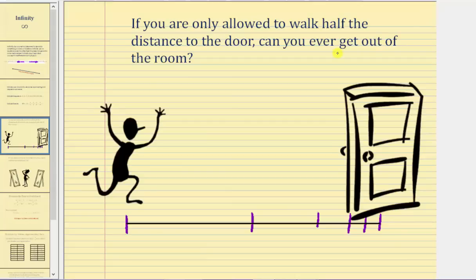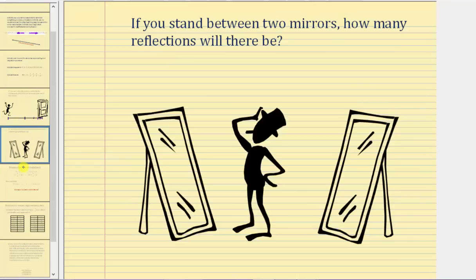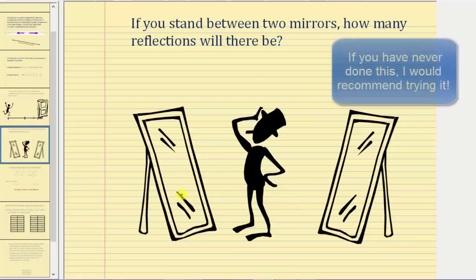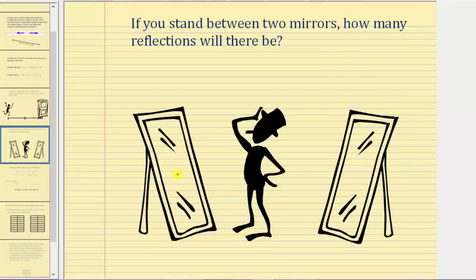For a second situation — one of my favorites — if you stand between two mirrors, how many reflections will there be? If you've ever done this, you'll notice there's going to be a reflection of a reflection of a reflection, and so on, when you look into the mirror. Because the number of reflections is limitless or endless, we can say there would be an infinite number of reflections, even though, due to limitations of our eyes, we'd only see a certain number of reflections.